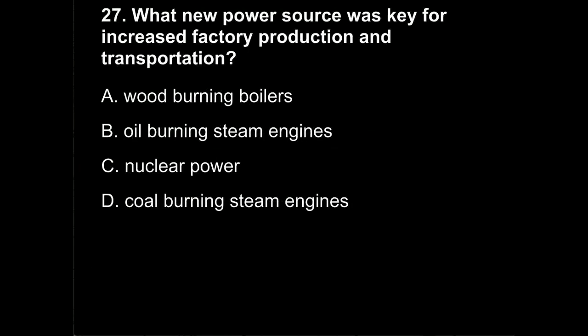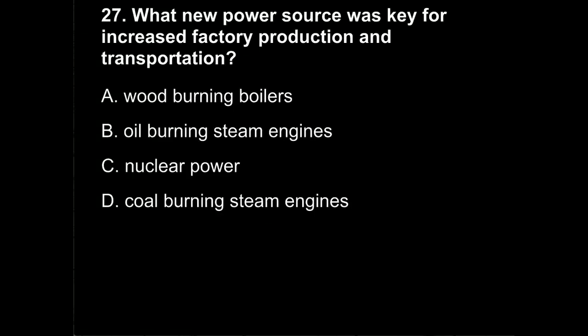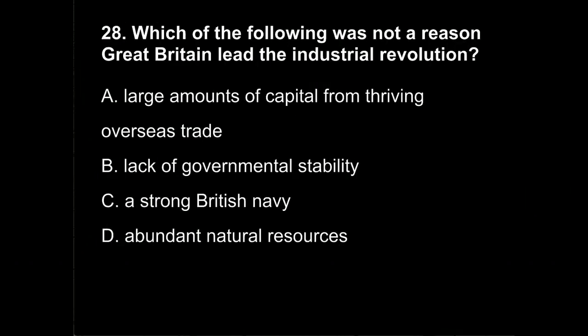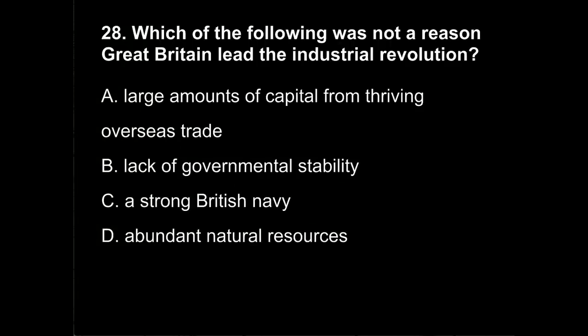Question 27. What new power source was key for increased factory production and transportation? A, wood burning boilers? B, oil burning steam engines? C, nuclear power? Or D, coal burning steam engines? Question 28. Which of the following was not a reason Great Britain led the Industrial Revolution? Was it A, large amounts of capital from thriving overseas trade? B, lack of government stability? C, a strong British Navy? Or D, abundant natural resources?